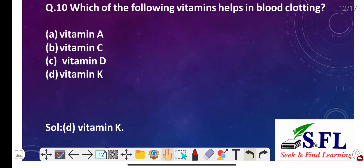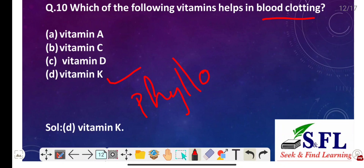Question number ten: Which of the following vitamins helps in blood clotting? The options are vitamin A, vitamin C, vitamin D, and vitamin K. The correct answer is option D, vitamin K. Vitamin K is also known as phylloquinone. It is one of the fat-soluble vitamins and helps with blood clotting — it thickens the blood to stop bleeding.